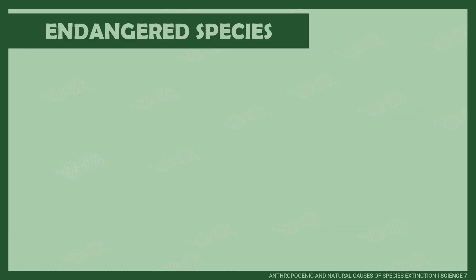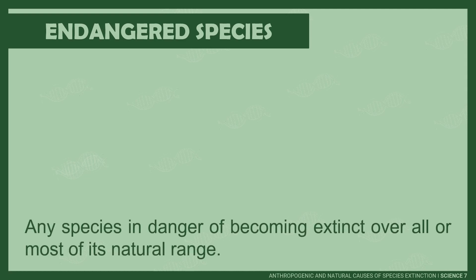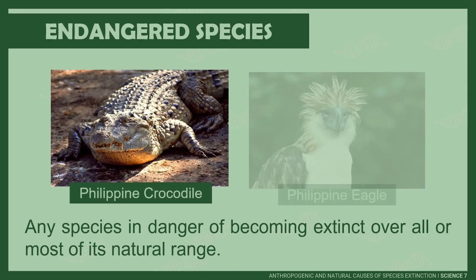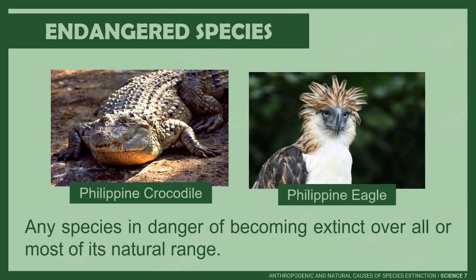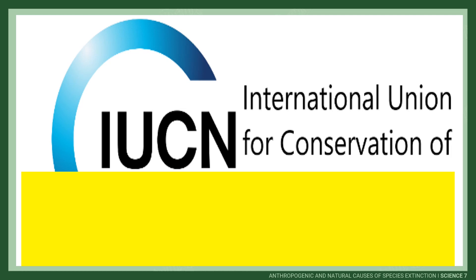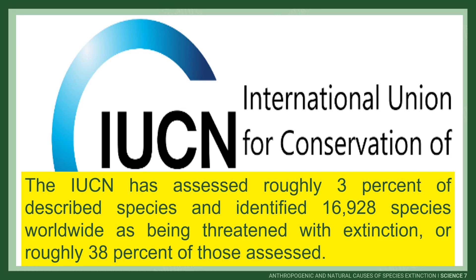Before a species reaches the stage of extinction, its population should be first categorized as endangered in order to prevent total disappearance. Endangered species are those in danger of becoming extinct. The Philippine crocodile and Philippine eagle are examples of endangered species. According to IUCN, or the International Union for Conservation of Nature, there are roughly 16,928 identified species worldwide as being threatened for extinction.